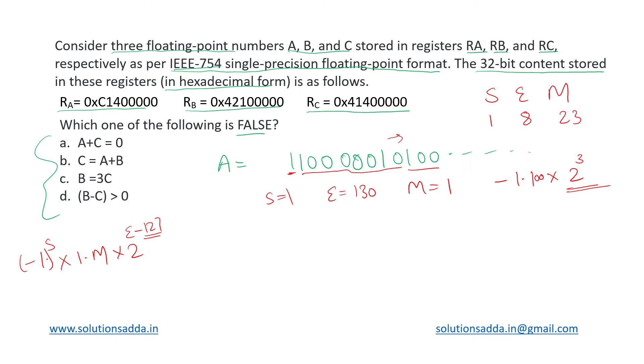Now that it is 2 to the power 3, we can shift this decimal point three times to the right. So this will become minus of 1100, which actually is minus 12. So our A is minus 12.